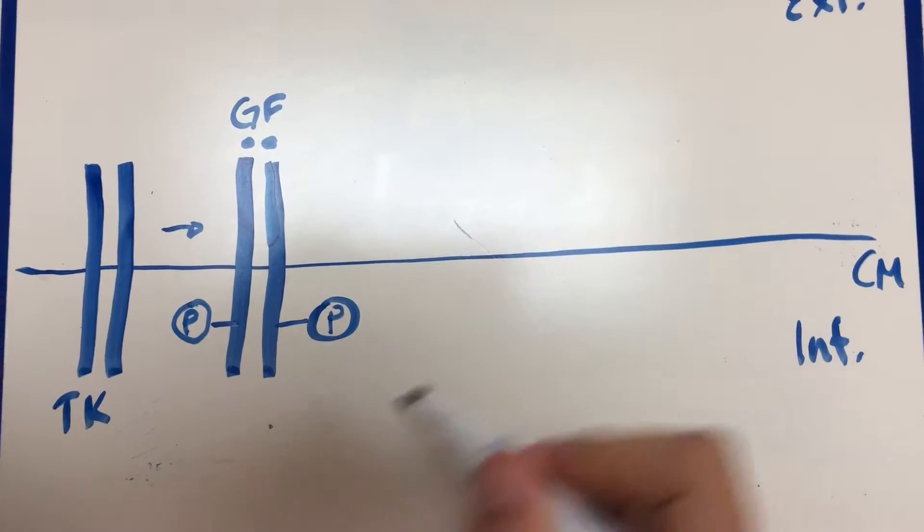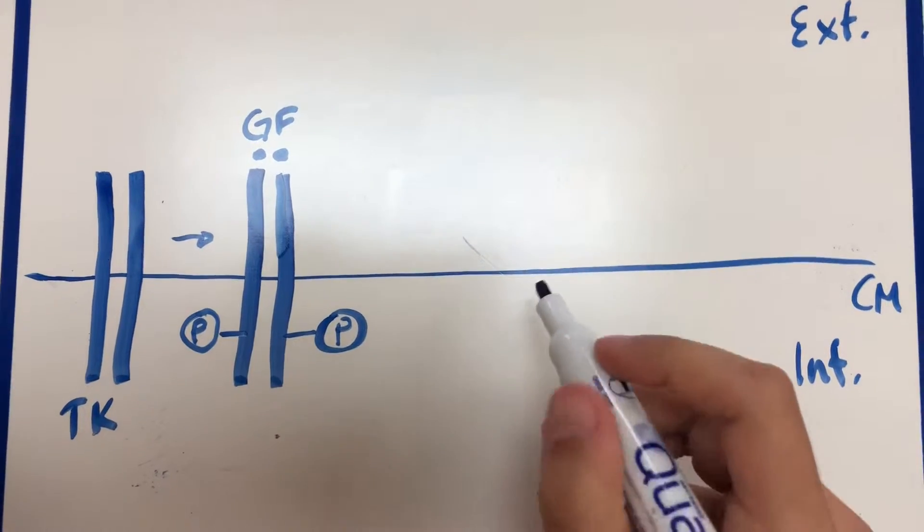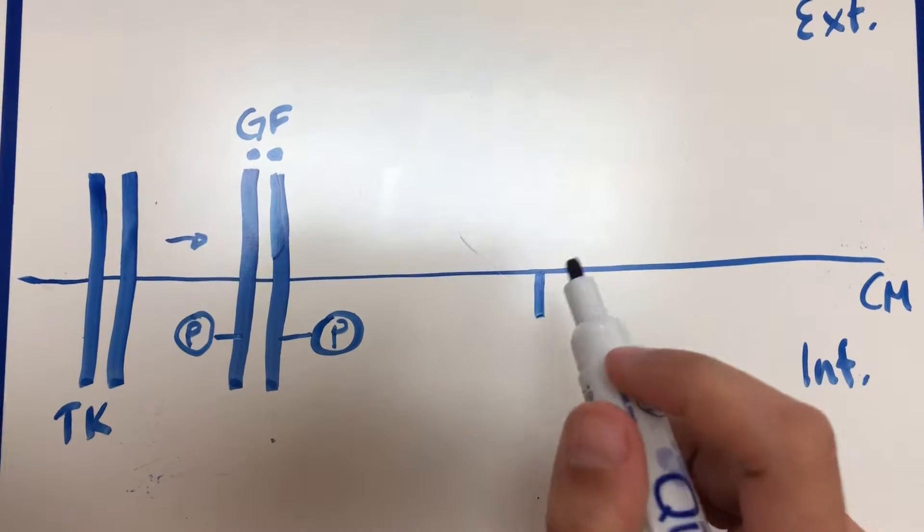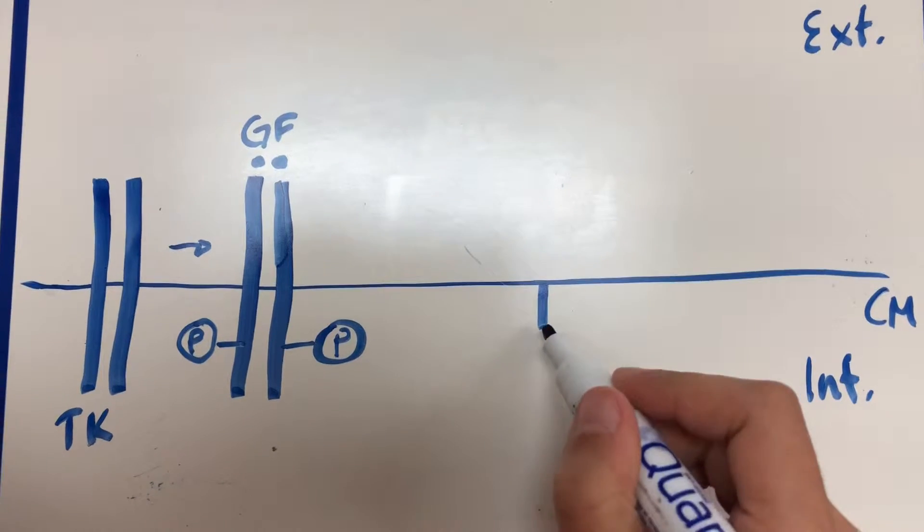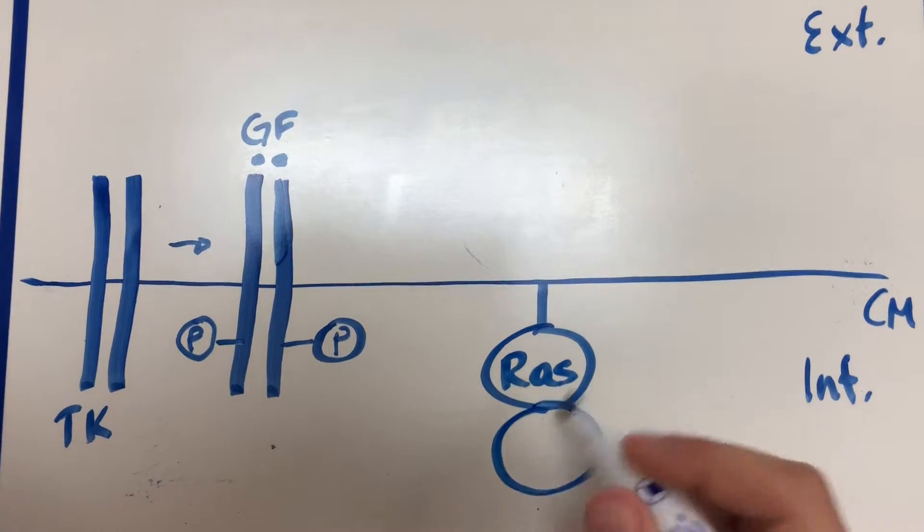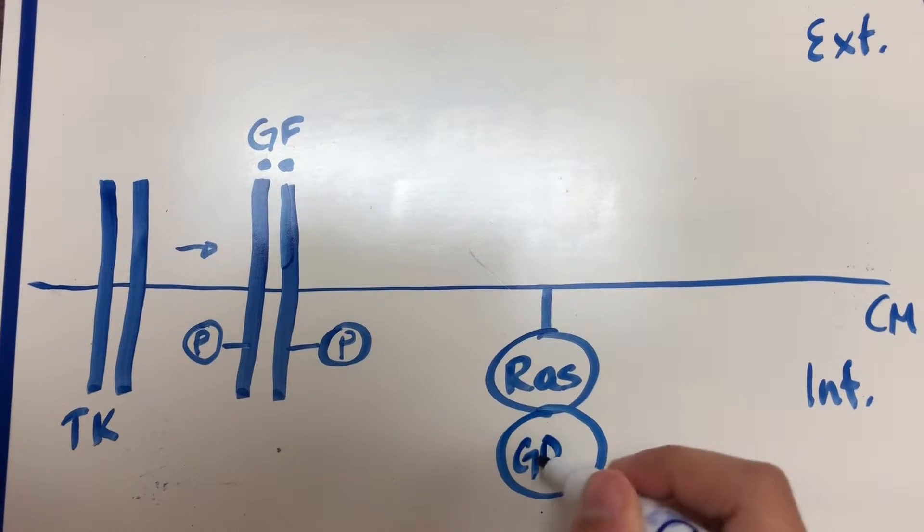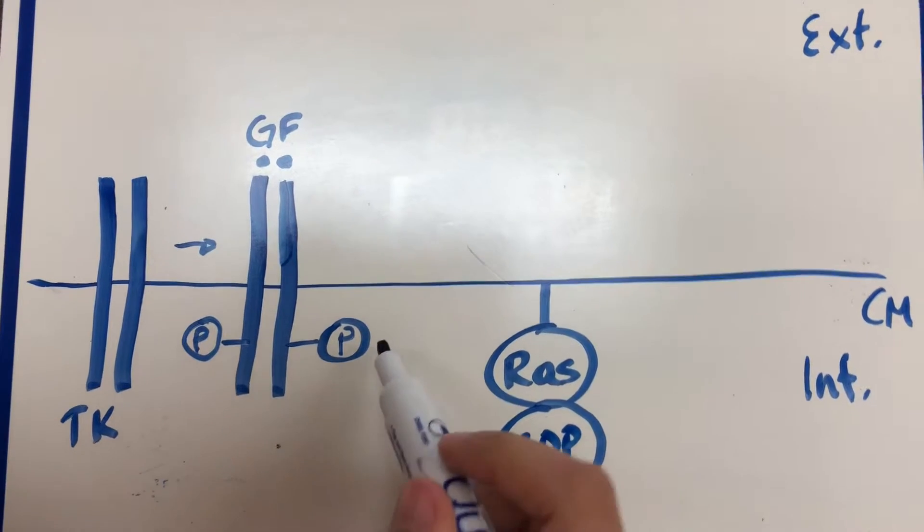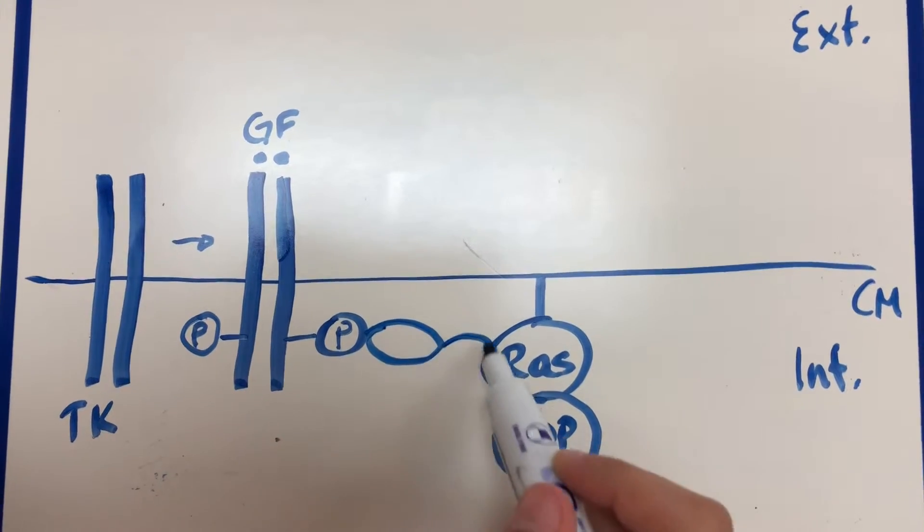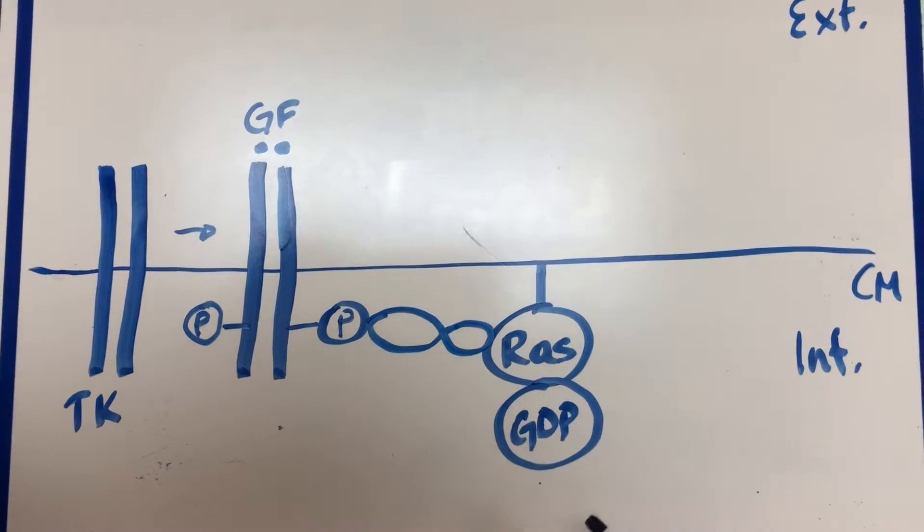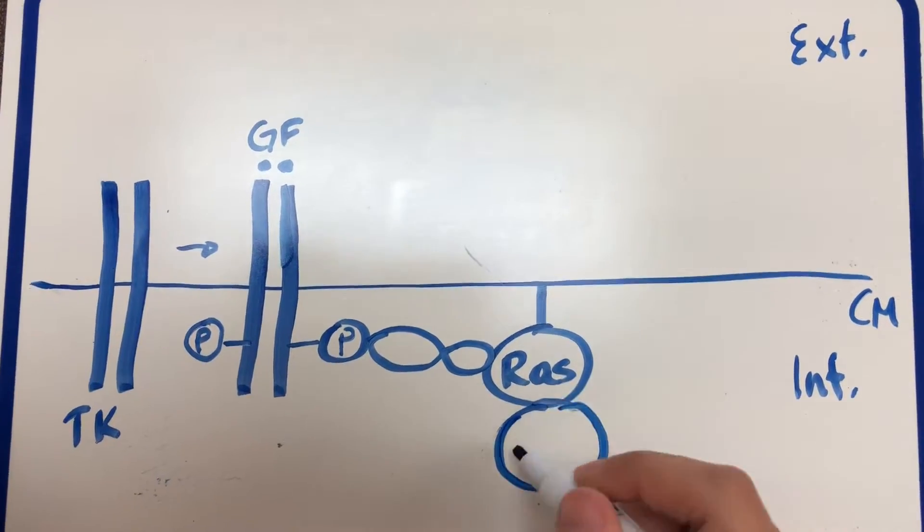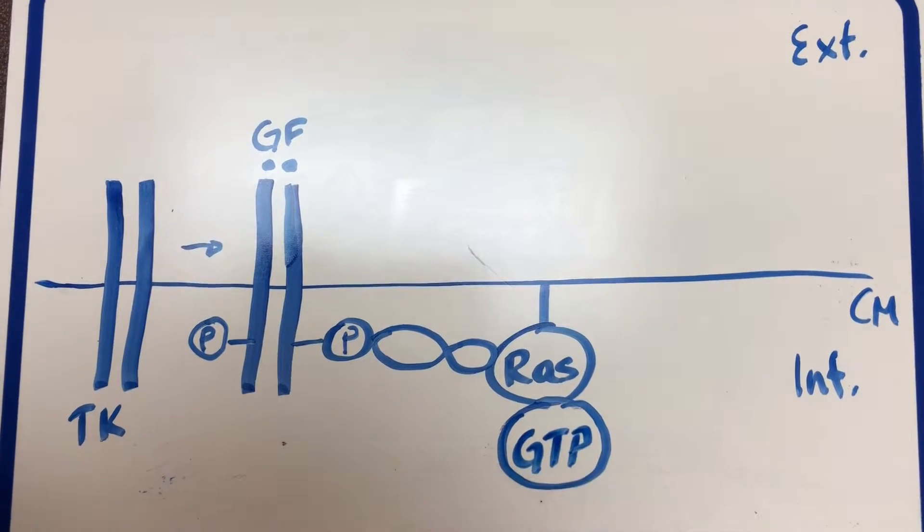So after it gets phosphorylated it's going to bind to RAS, but it doesn't bind to RAS directly. So RAS we said was a membrane attached G protein, right? So we have RAS here doing its thing. And RAS is bound to GDP when it's inactive. So right now it's inactive, but then it's going to interact with the tyrosine kinase through these bridging proteins. After it interacts with the tyrosine kinase, RAS becomes activated and in its active state it's going to be bound to GTP.